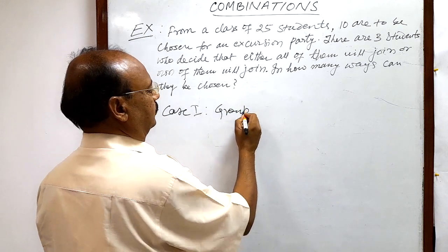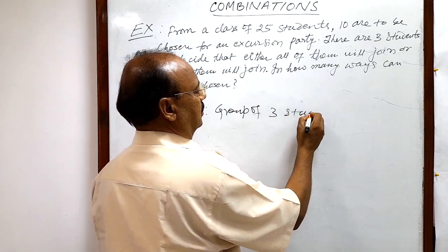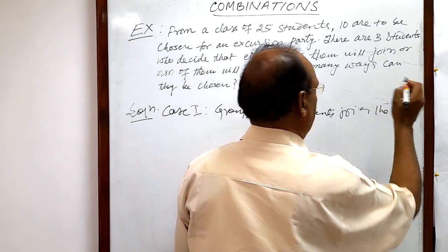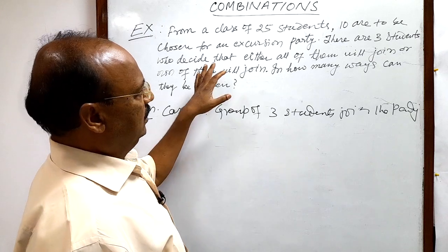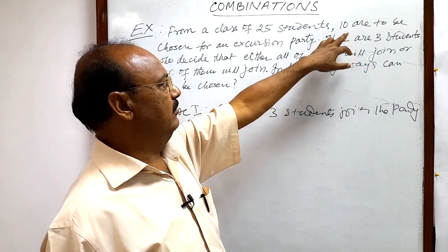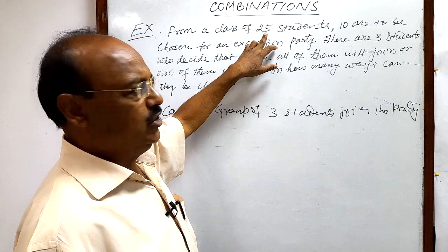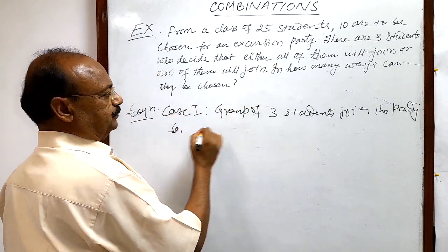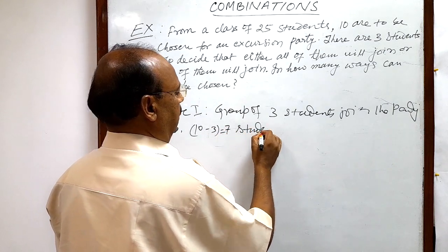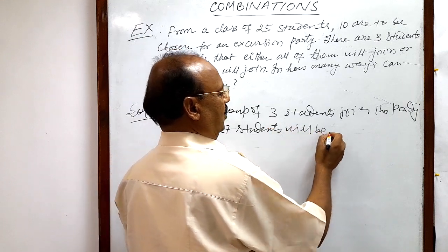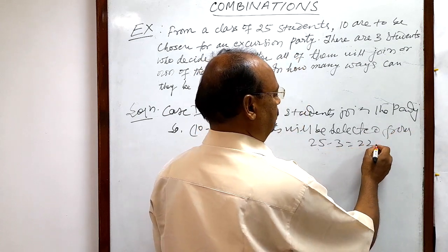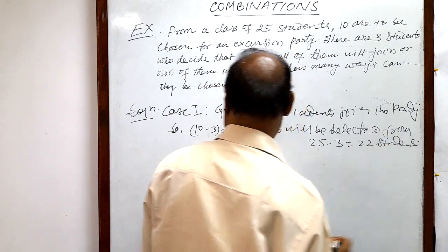Case one: when the group of three students join the party. If three students join the party, then we will select 10 minus 3, because three are already joining, so 10 minus 3 that is 7 students will be selected from 25 minus 3, that is 22 students.